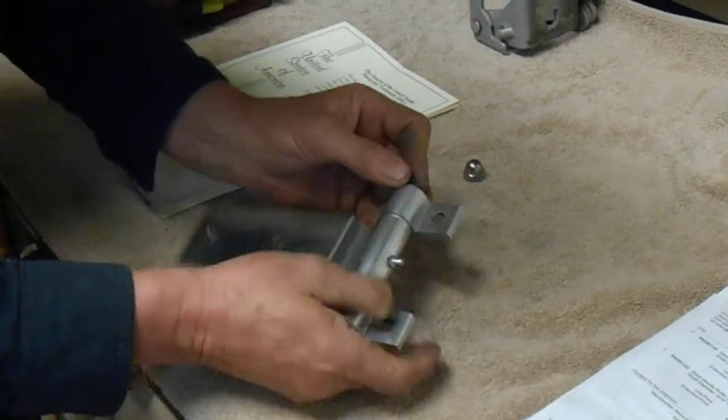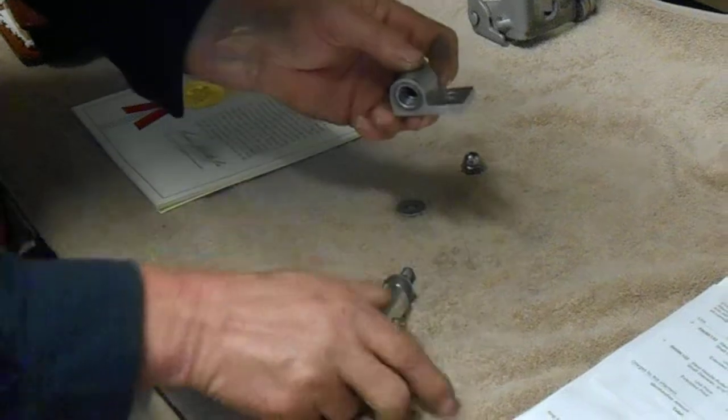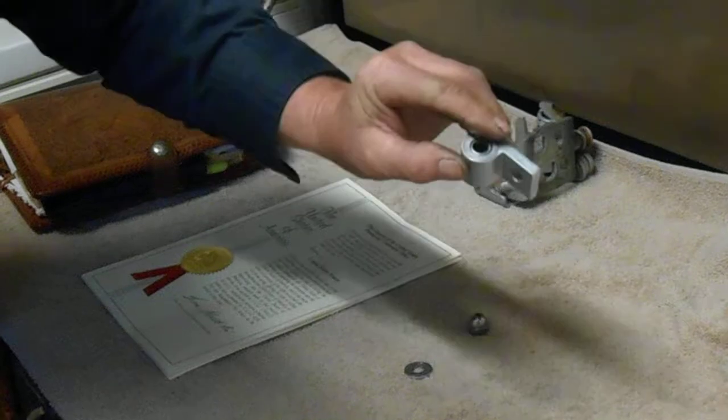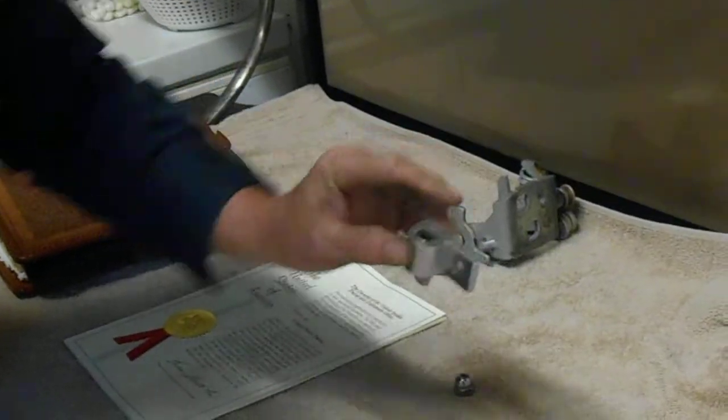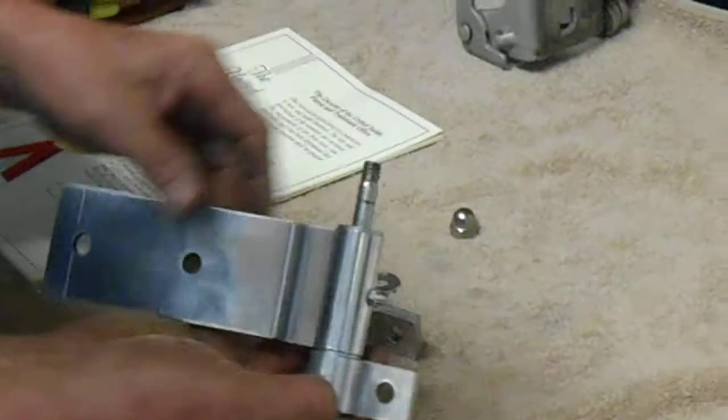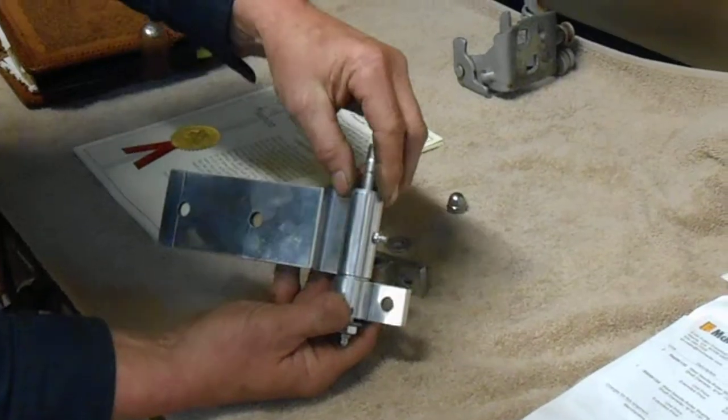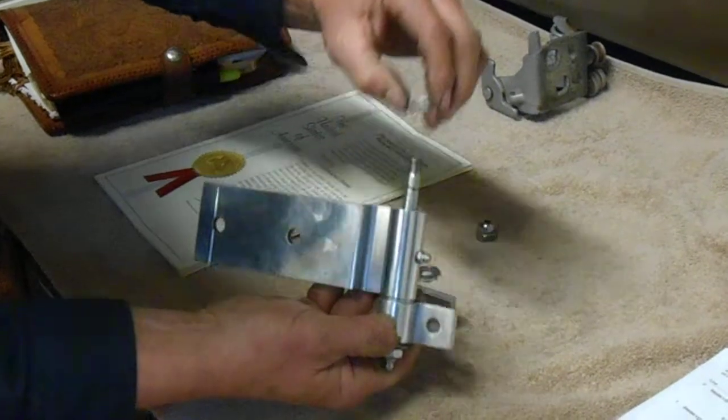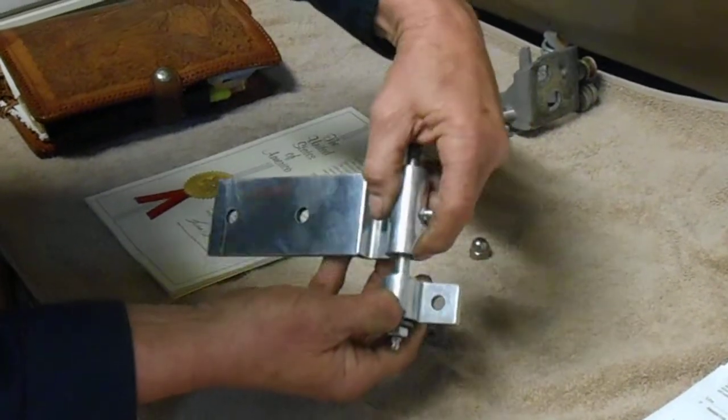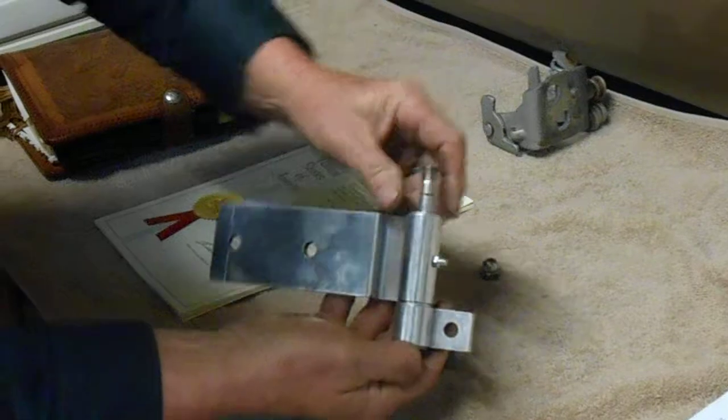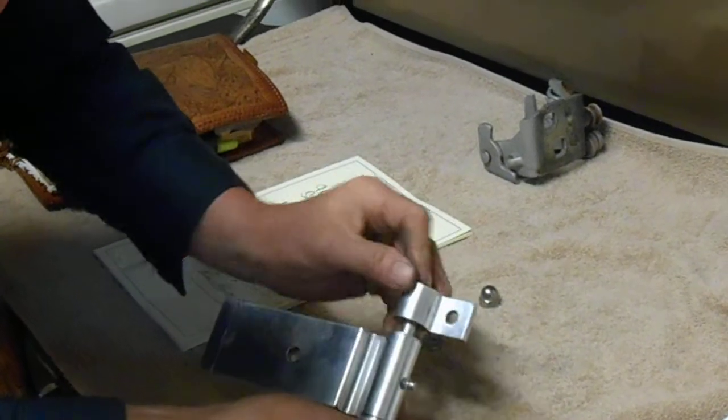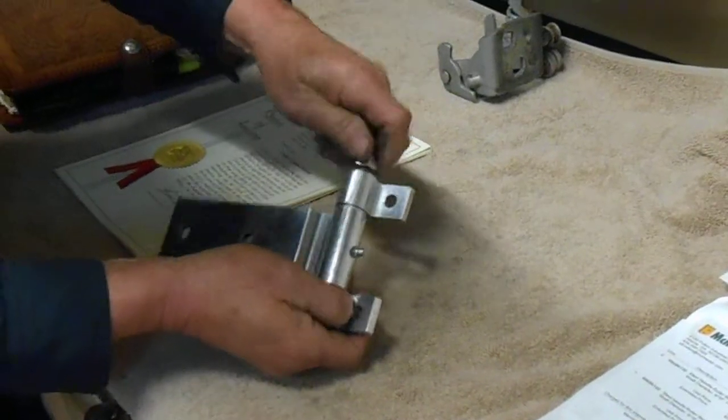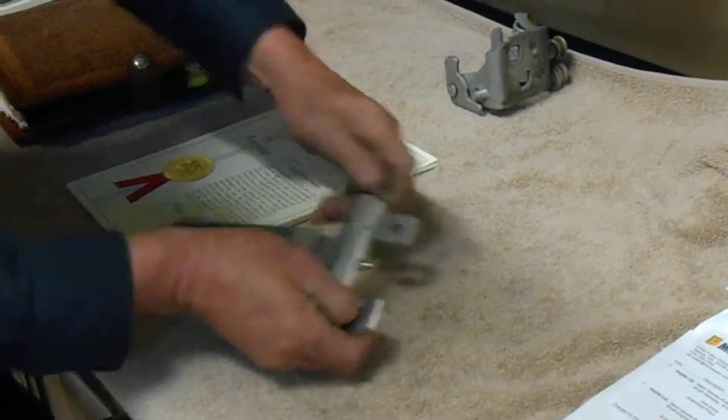If you'll notice there is a stop inside here for that bearing not to go no further than where it's at right now. If it's a heavy application we can also put what they call a thrust washer on this application here for more weight. Now we're going to put this thing back together and discuss the price.